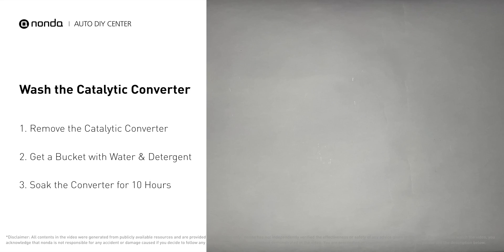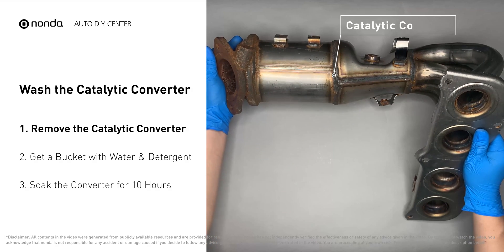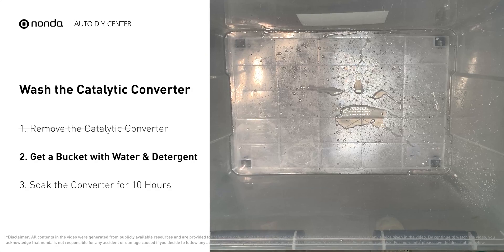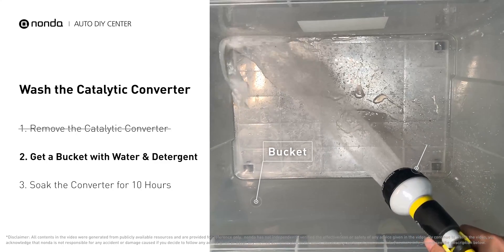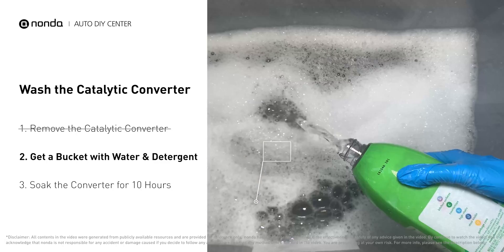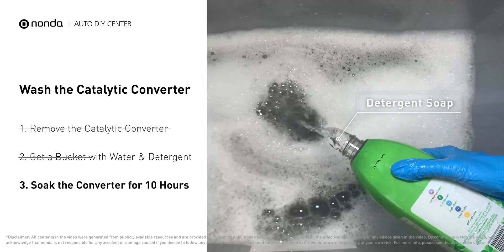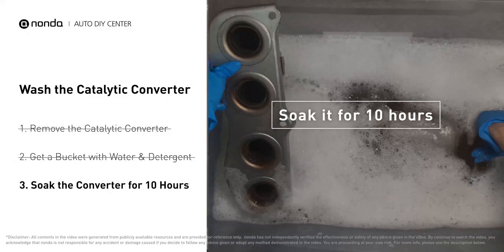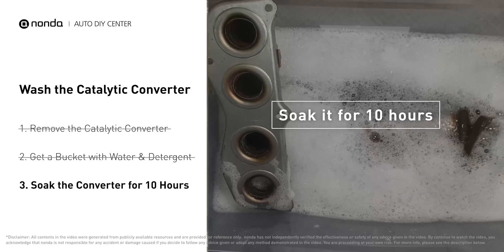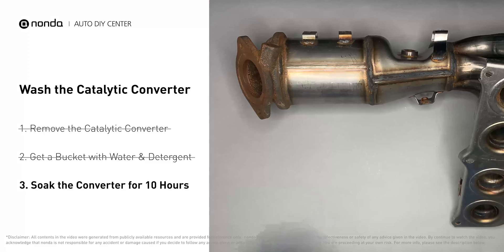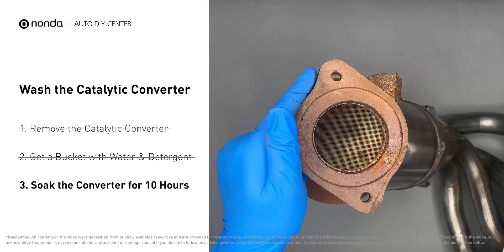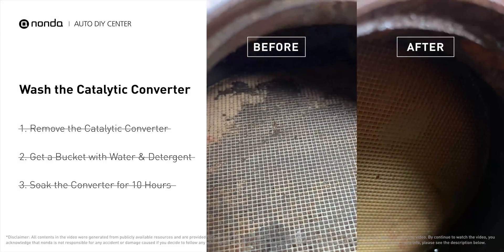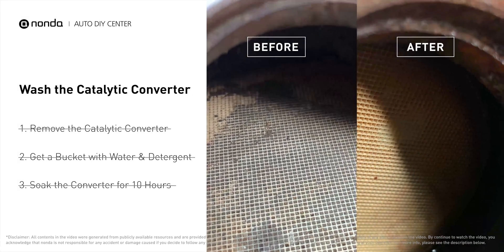The first thing you need to do is remove the catalytic converter from your vehicle. Then get a bucket, put some detergent soap in it, and foam it up. Put the catalytic converter into the solution and soak it for 10 hours to remove all the crud inside. Looking inside the converter, you can see all kinds of little honeycomb shapes — they clog up really easily, and cleaning will often make them open and work again.